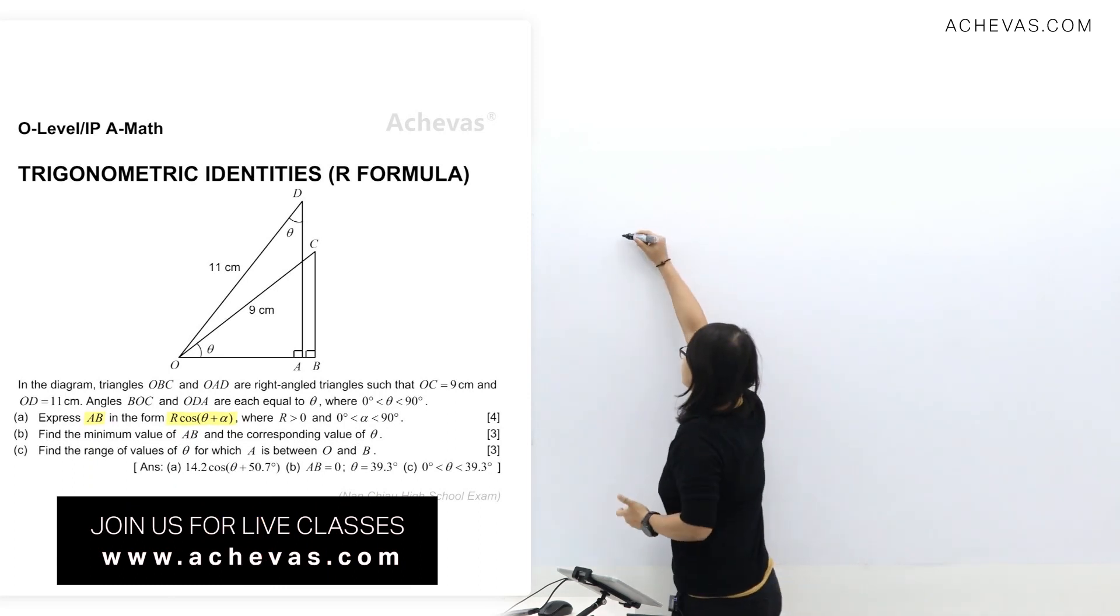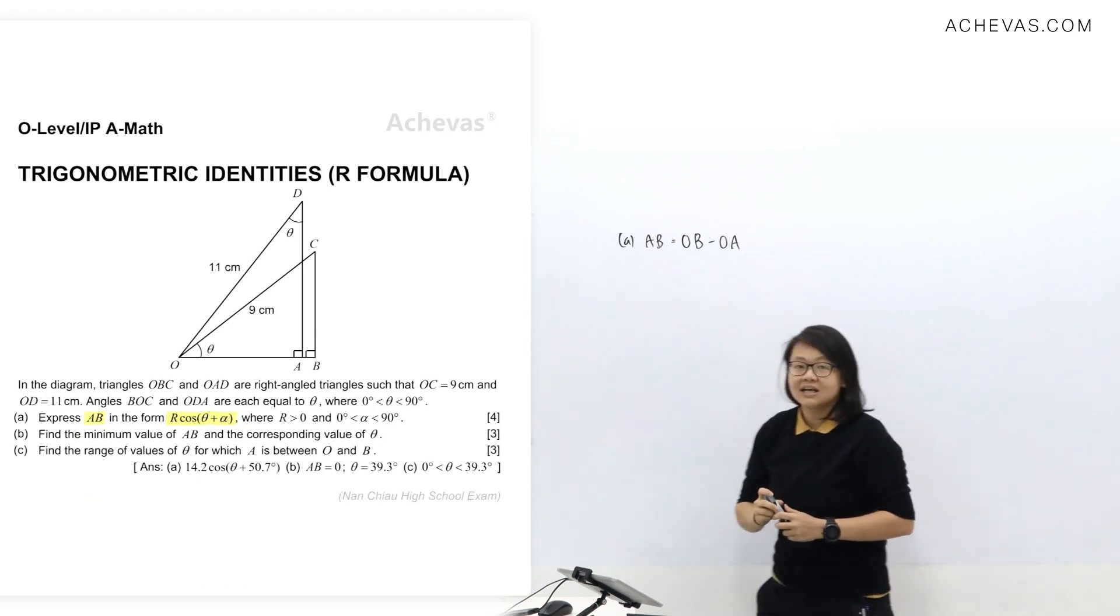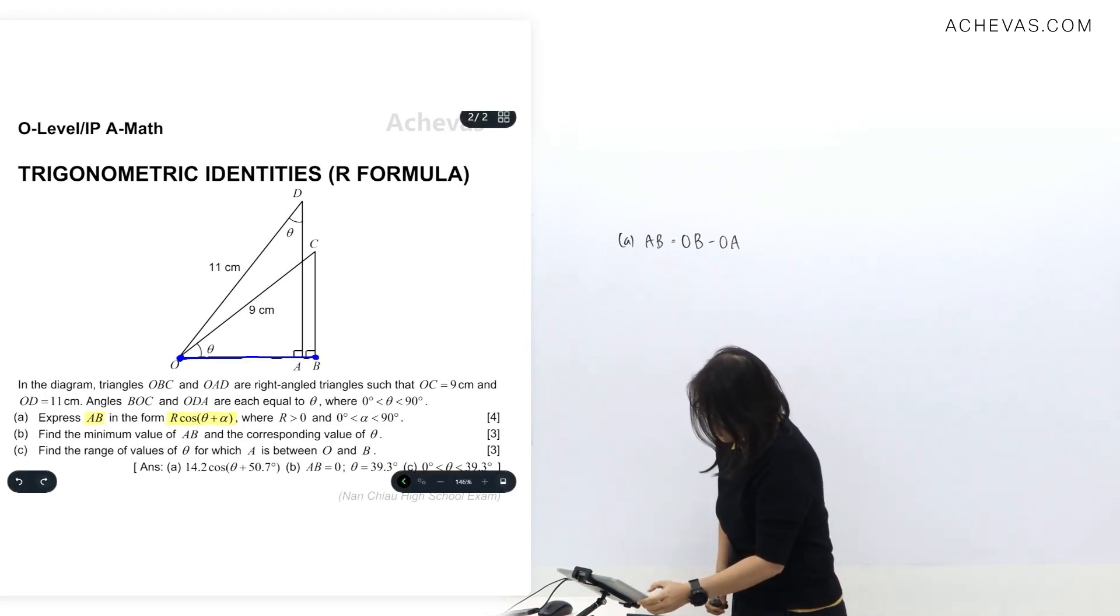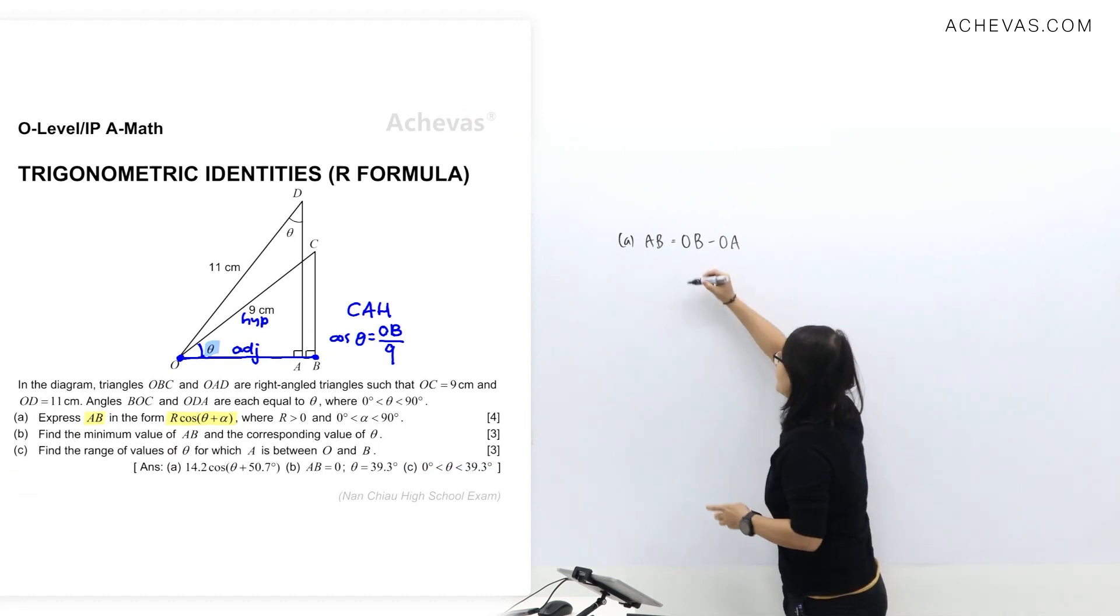Now, let me put down here first AB. Based on the diagram, I can see that AB is OB minus OA. Let us figure out how can we get the value of OB from the triangle. OB is the adjacent side to this angle theta here and we are given hypotenuse as 9. So for the first triangle, I'm going to apply CAH where cos theta equals OB over 9. To find OB, I multiply 9 to the left. So for OB length here, I'll be getting 9 cos theta.